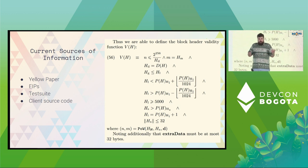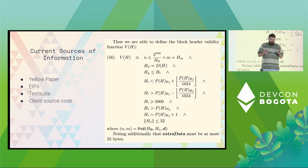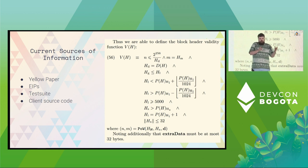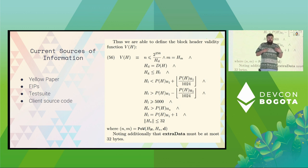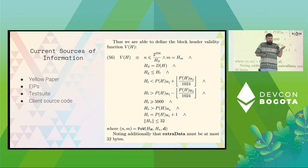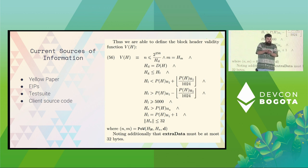Secondly, you can look at EIPs. EIPs are individual slices of changes — they're specific change proposals. You can look at them and see the history, but they don't tell you about the relationship. They only tell you about individual changes in isolation. For example, if you read two EIPs where one thing says this and another says that, how do those two things interact? And you just can't get that from EIPs.